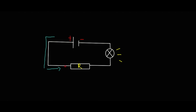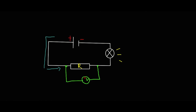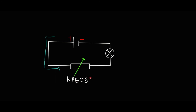We can also connect a voltmeter here to measure the potential difference across the resistor, since the resistor reduces a certain amount of energy. We can also connect what we call a rheostat — a variable resistor — which is a resistor you can adjust, something like a sliding button.